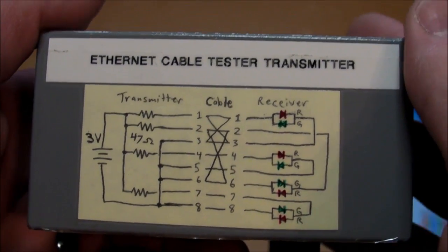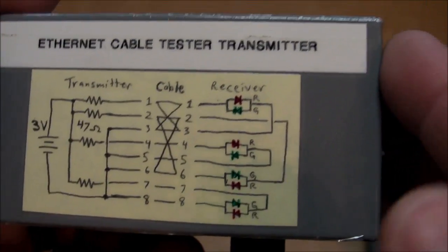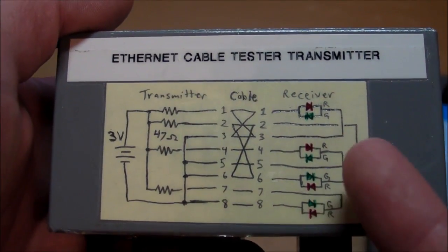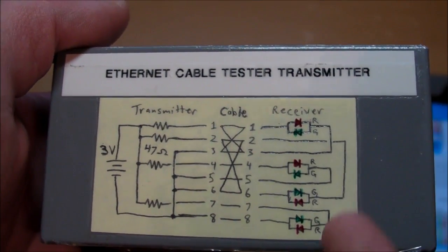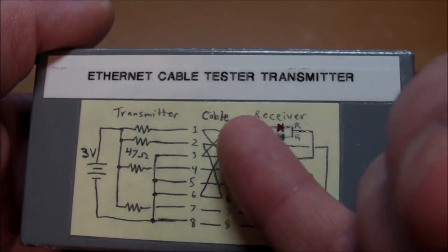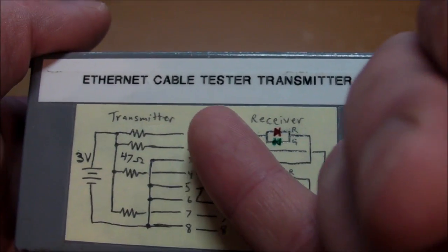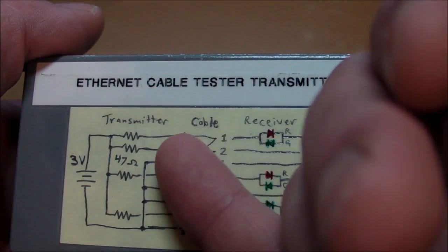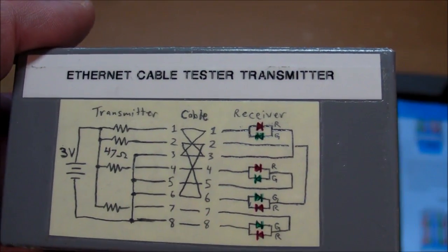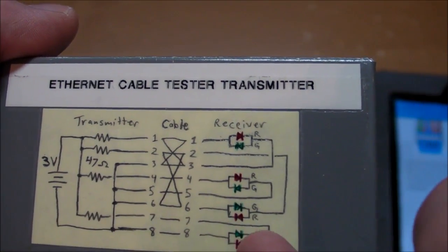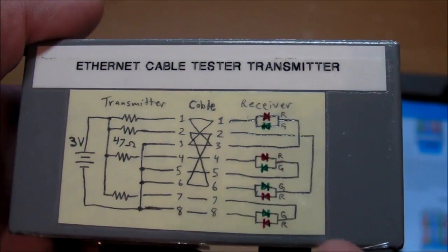Now, I must admit, this tester is not absolutely perfect. It doesn't account for all problems. You could still have a false positive. For example, if you were measuring, if you wanted to test a straight-through cable, but pins 1 and 2 happen to be crossover, then you're still going to get all red LEDs, even though one twisted pair...